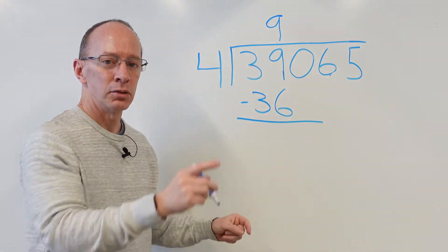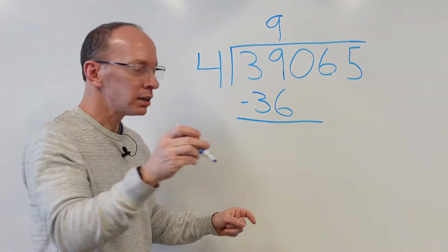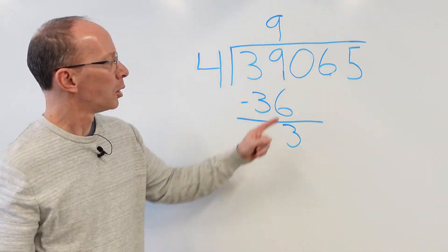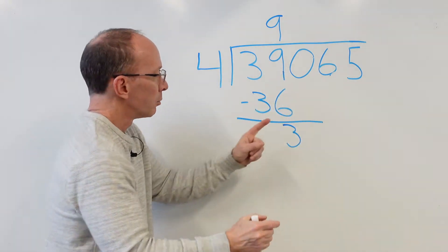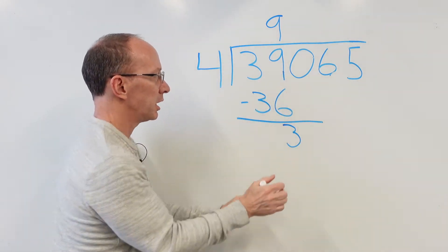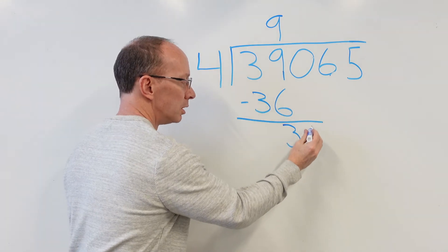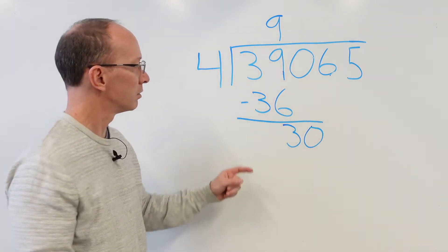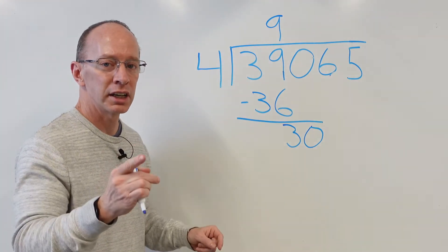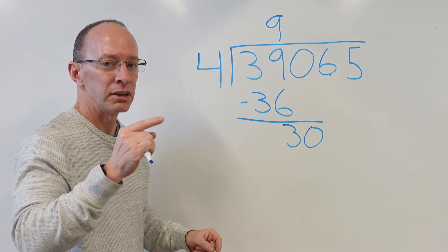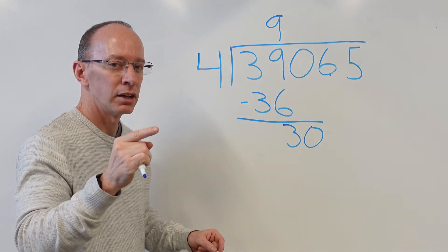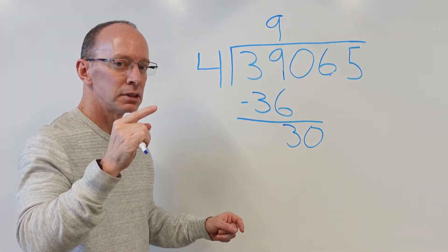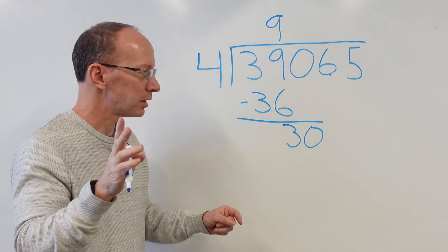Subtract: 9 minus 6 is 3. You guys are doing awesome. Bring that number down — bring the zero down. Can I put 4 into 30? Yes, you can. 4 times 7 is 28. Let's stick with that one — 4 times 7. Don't want to go over.